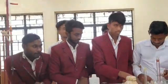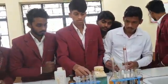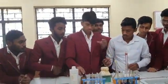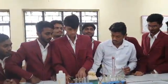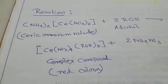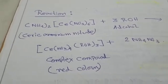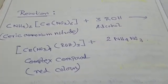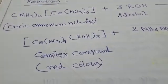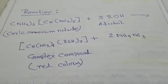Now again another test — that is a confirmatory test: the ceric ammonium nitrate test. What we will do? In the alcohol solution, we will add the ceric ammonium nitrate. Students, you know the formula of ceric ammonium nitrate: (NH4)2[Ce(NO3)6]. The general formula of alcohol is ROH. And it will produce a wine red color complex compound. We see the color change to wine red.